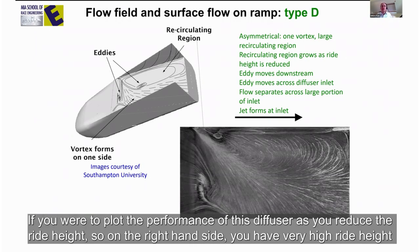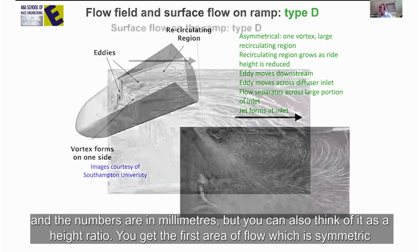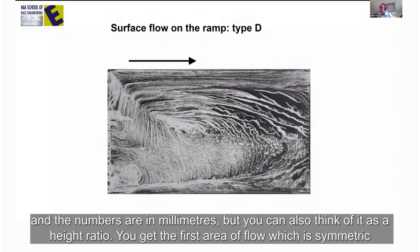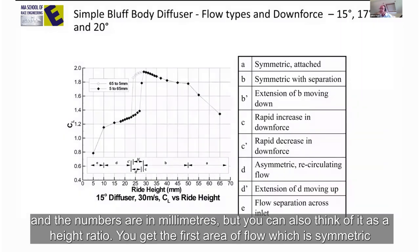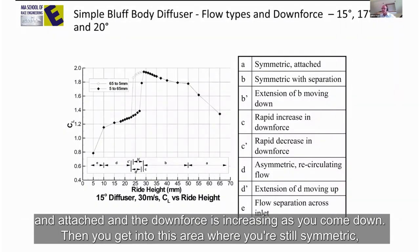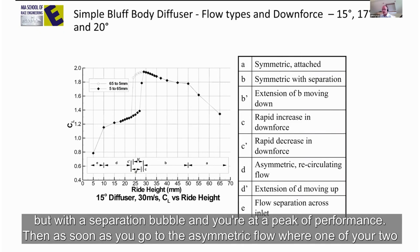And if you were to plot the performance of this diffuser as you reduce the ride height, so on the right hand side you have very high ride height. The numbers are in millimeters, but you can also think of it as a height ratio. So the first area of flow is symmetric and attached, and the downforce is increasing as you come down. Then you get into this area where you're still symmetric but with a separation bubble, and you're at a peak of performance.